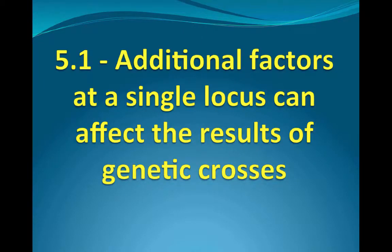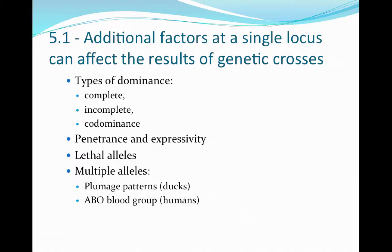This lecture is set up very much like the book, so we're going to attack it section by section. The first section in Chapter 5 really talks about some additional factors that can happen at a single locus — so we're talking about single genes, and that has the ability to affect the genetics of the different crosses.